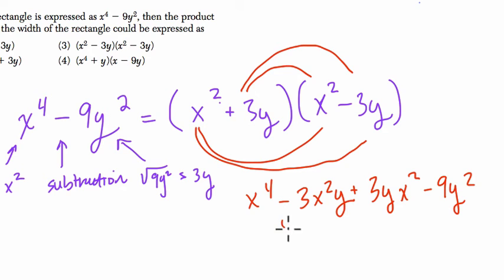So these two terms in the middle cancel out because even though the variables are in different orders, x squared times y equals y times x squared, based on the commutative property of multiplication. Even though the order is different,